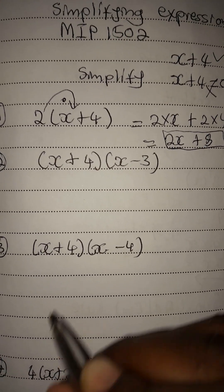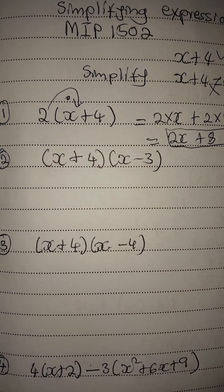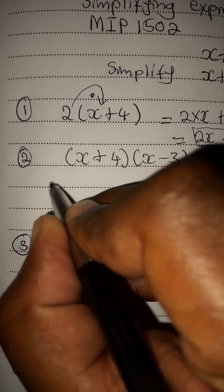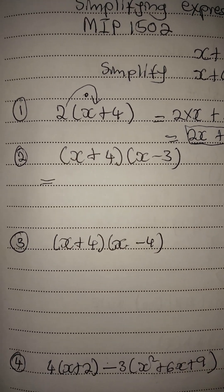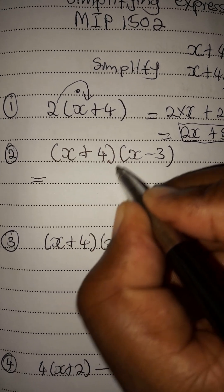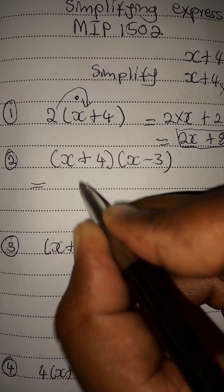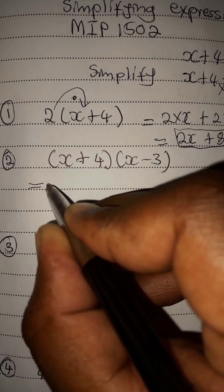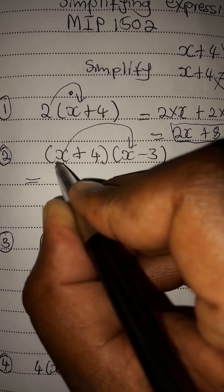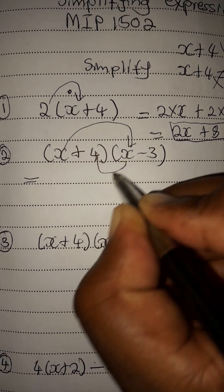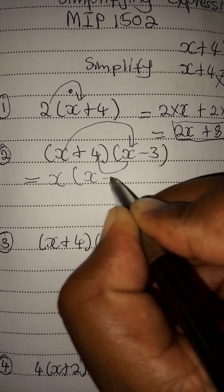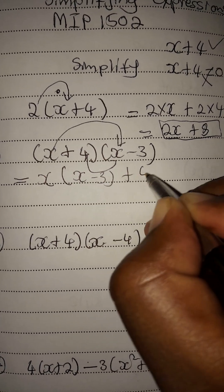This is a typical question they can ask you in an examination. The next one involves simplifying a binomial. We are going to use the distributive law — the first term multiplies the second bracket and 4 multiplies the second bracket. So we say x multiplied by (x minus 3) plus 4 multiplied by (x minus 3).